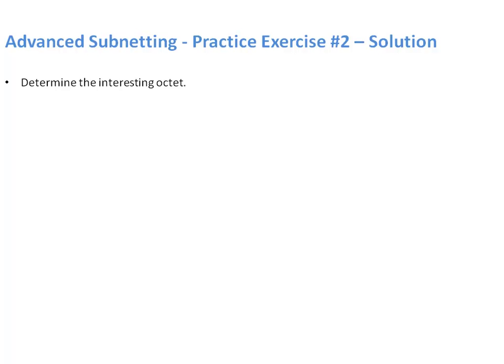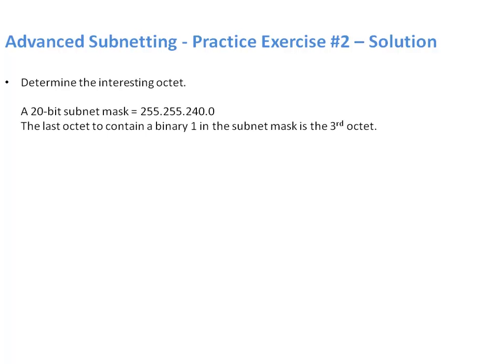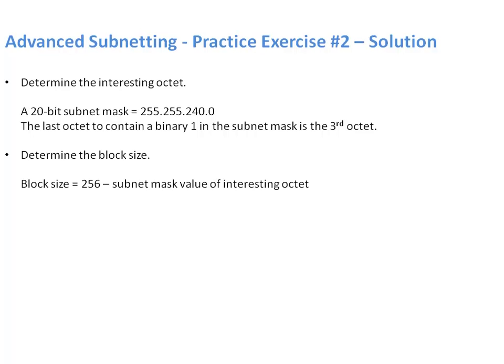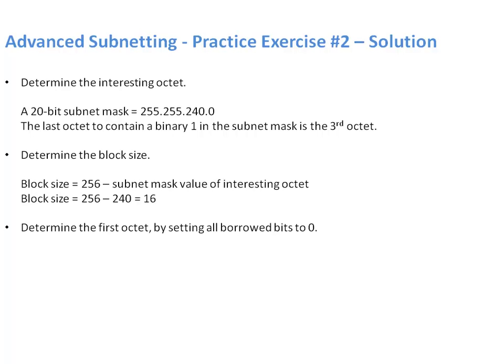Let's check our answers. Step 1, determine the interesting octet. With a 20-bit subnet mask — 255.255.240.0 — the last octet to contain a 1 is the third octet. That's our interesting octet. Step 2, determine the block size: 256 minus the subnet value in that interesting octet, which is 240. What is 256 minus 240? That's 16. Setting all four borrowed bits to zero gives us the first subnet, 172.16.0.0, except this time with a slash 20 subnet mask.